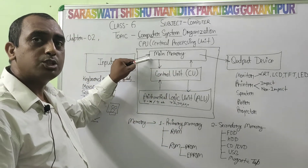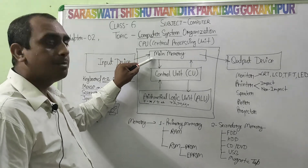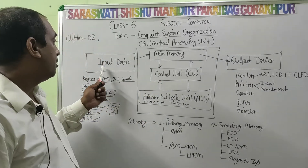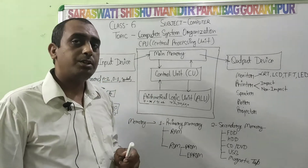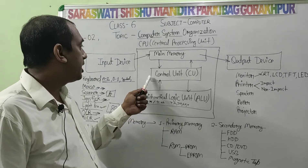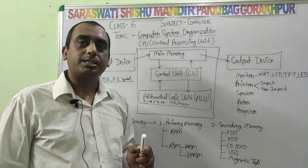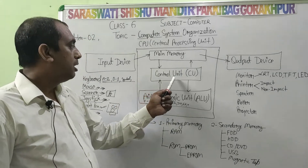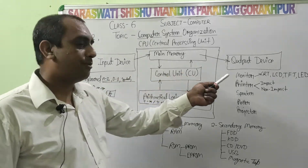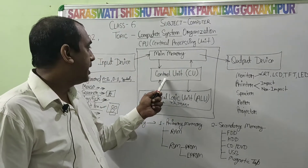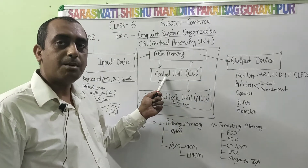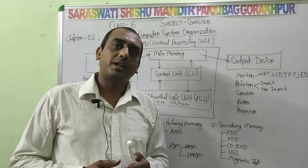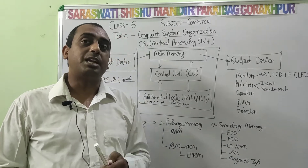Memory is used to store data. Hardware means the physical parts of the computer which we can touch and see. The Control Unit controls and operates all hardware and software in the computer. So the Control Unit is called the manager of the computer, where all data is stored and all hardware is controlled.